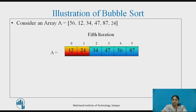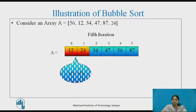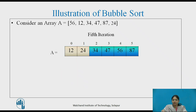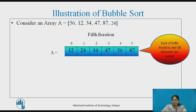In the fifth iteration, the comparison begins from the very beginning. The first two elements are compared and A[0] is lesser than A[1], so no swapping is done. At the end of the fifth iteration, all the elements are sorted. In each iteration, one element is sorted at its proper place. In the next iteration, that sorted element is ignored and comparison is done only over the remaining unsorted portion of the array.